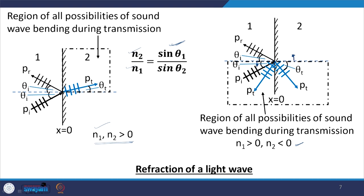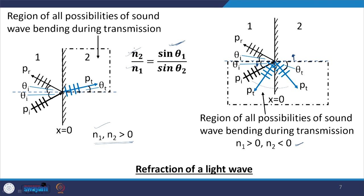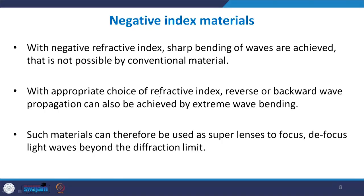A negative value of theta t means the wave bends in the opposite direction. This is the region of all possible positive bendings that can take place. With appropriate choice of a highly negative N₂, theta t can be so large that the wave cannot enter the material — it simply bends around and reverts. Therefore such materials are heavily used to make super lenses where very sharp bending of electromagnetic waves such as light can be obtained.